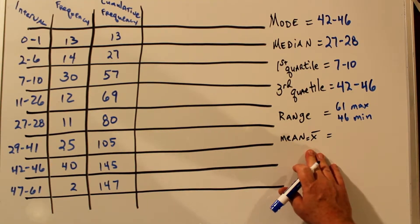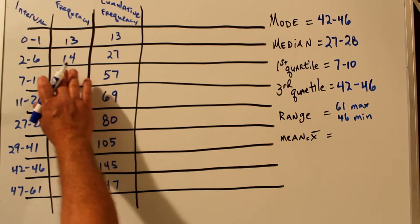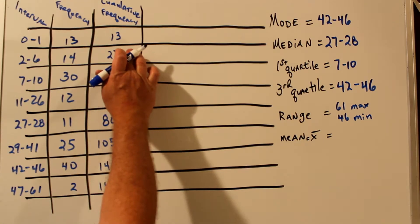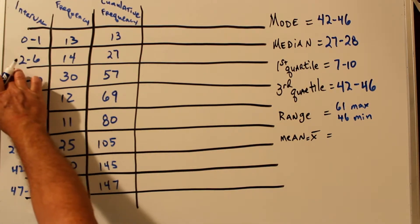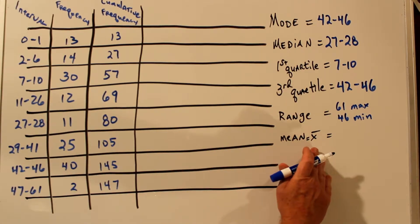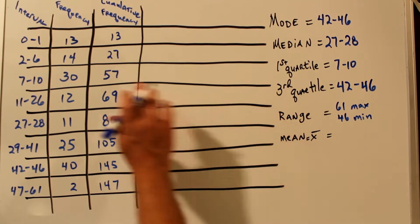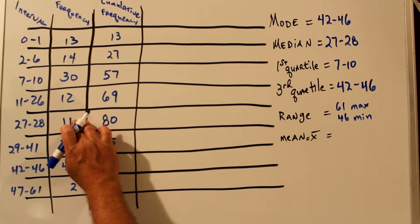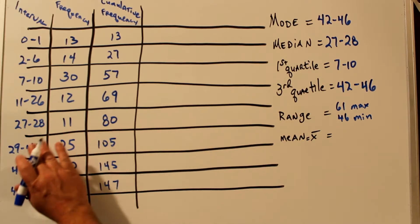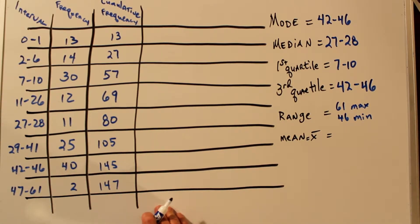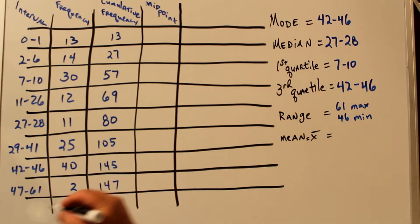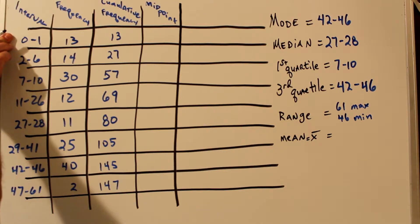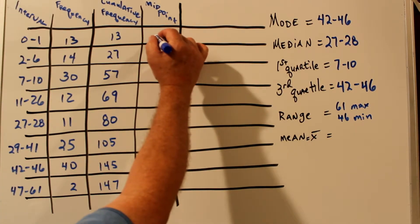Now we have to find our average of all the data points. The first thing we notice is that we don't know what the value is for these 13. Is it zero? Is it one? We don't know the value of these 27 data points. It could be anywhere between two and six. So the way we calculate the average in this case is we find the midpoint for each interval, multiply it by the number in that interval. That gives us a value for each category, and then we take the average of those. So we need a couple more columns. The first one is the midpoint column. Now we're going to average each interval. The way we do that is add them up and divide by two. So one plus zero divided by two is one half, or 0.5.